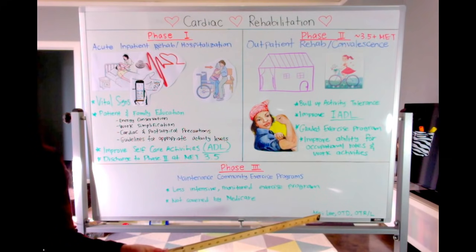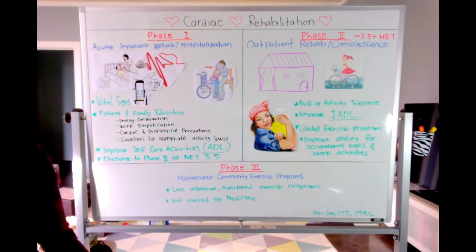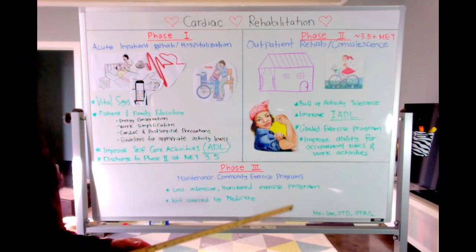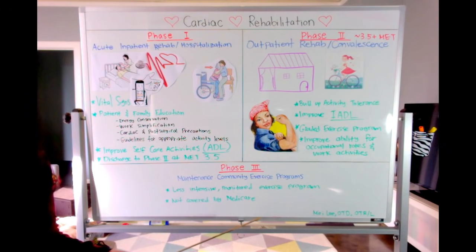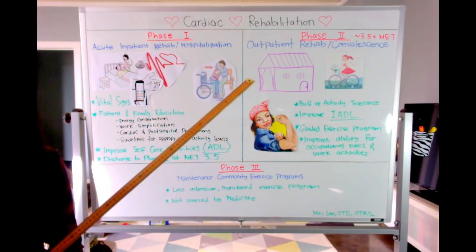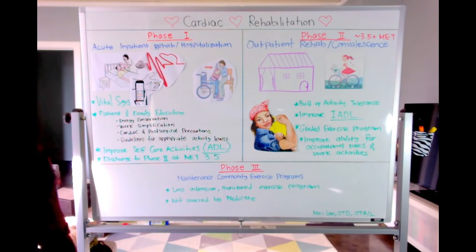Finally, moving on to phase three—this is the maintenance phase, which begins after the completion of phase two and involves a much less intense monitored exercise program. Here, patients will generally attend a session once a week in community-based exercise program, and if they are strong enough to tolerate outpatient therapy, they may continue treatment from home. One thing to note here is, what do we know about maintenance programs? It is not covered by Medicare.